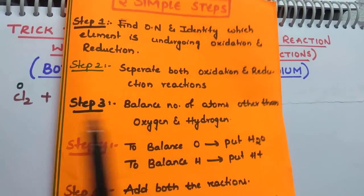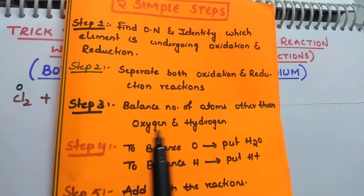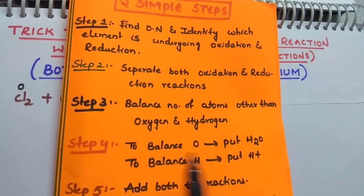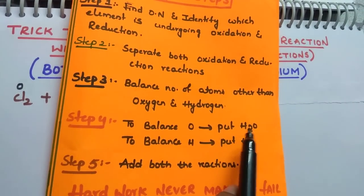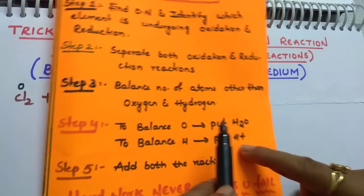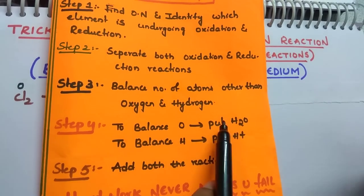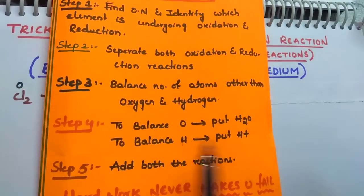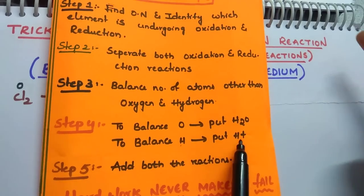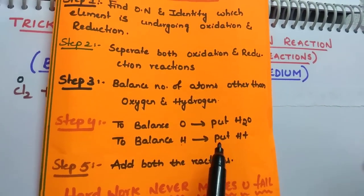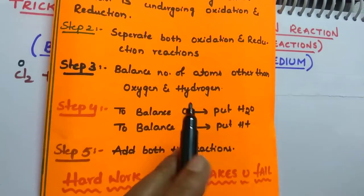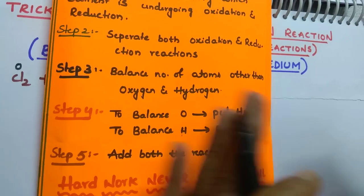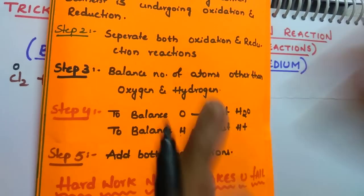After balancing the number of electrons, you can balance oxygen and hydrogen. To balance oxygen, just put water molecules — for one oxygen, put one water molecule. And to balance hydrogen, put H⁺ ions in the opposite direction. Once you have balanced both reactions separately, add both the reactions.